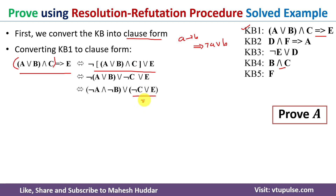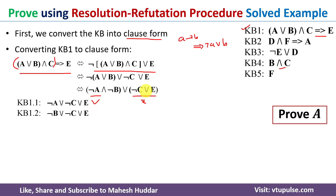If we consider that bracket as X, we can distribute X to negation of A one time and to negation of B a second time. Distributing to negation of A gives: negation of A or negation of C or negation of E — that is clause 1.1. Distributing to negation of B gives: negation of B or negation of C or negation of E — that is clause 1.2. So we have converted knowledge base 1 into clause form: KB 1.1 and KB 1.2.